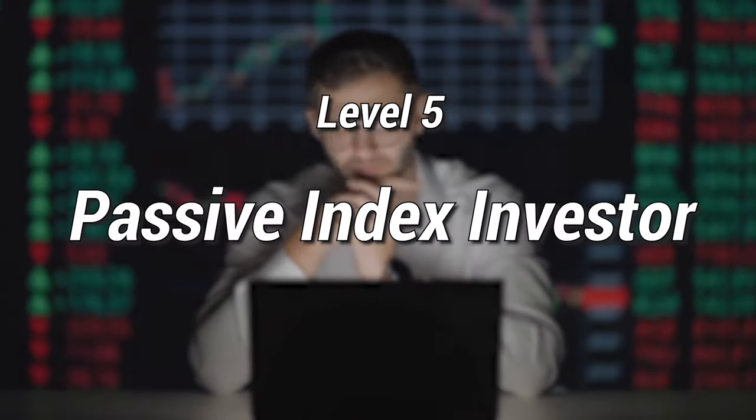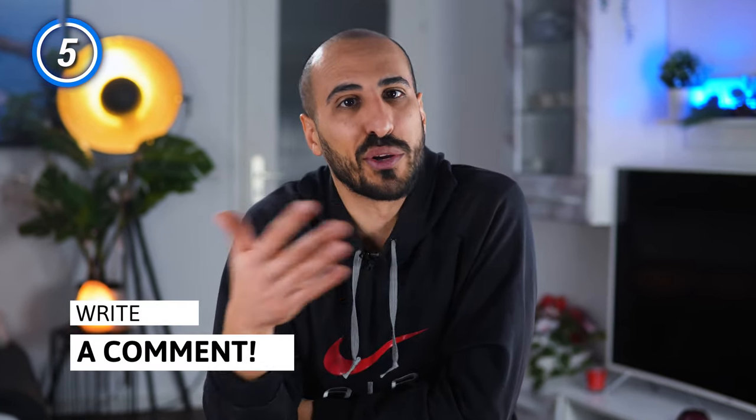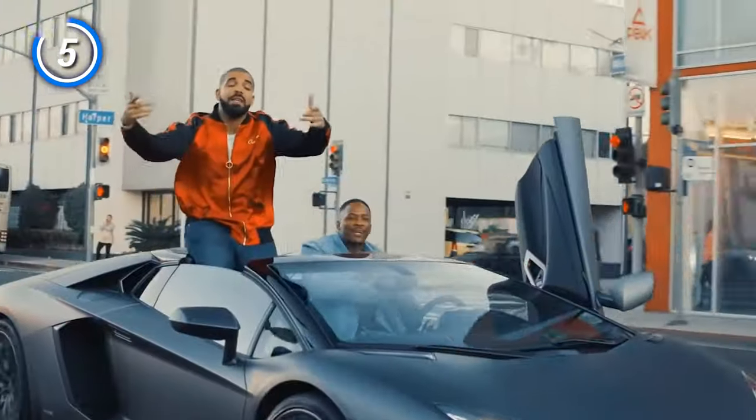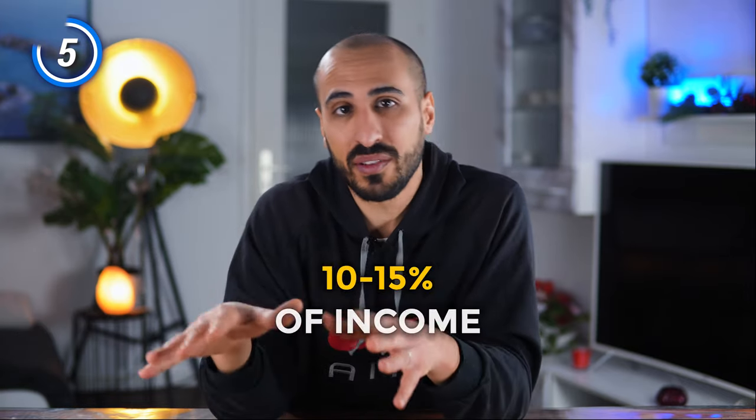Level 5 is the passive index investor, and it's okay for most people even as a final goal. This level represents people that invest in ETFs and index funds and do it passively, meaning they buy and hold for the long term. They usually have clear financial goals and don't get fancy or waste money on luxury vehicles. Interesting fact: most millionaires in America and in the world come from this level. They invest at least 10-15% of their income every month and they never sell.